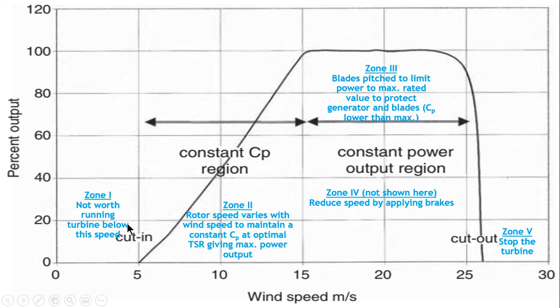In Zone 1, it is not worth running the wind turbine below this speed, and similarly the windmill is stopped after the cut-out speed. Now let's discuss Zone 2, Zone 3, and Zone 4. In Zone 2, the rotor speed varies with respect to wind to maintain a constant rotor efficiency and optimal tip speed ratio. In this area, maximum power is ensured.